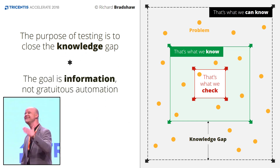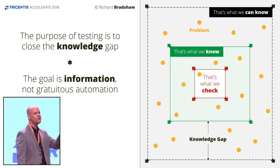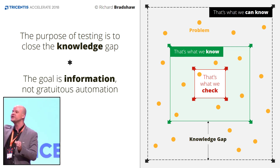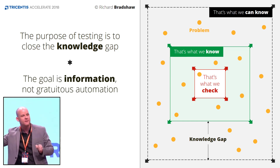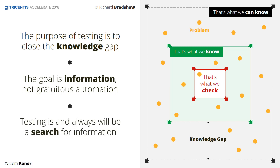So the goal of testing is information, not automation. And the reason for this is simple: a test is just a question you ask your software, and the point of running the test is to gain information. So testing is, always has been, and always will be a search for information. But don't get me wrong — the information sought often requires automation, but not always.